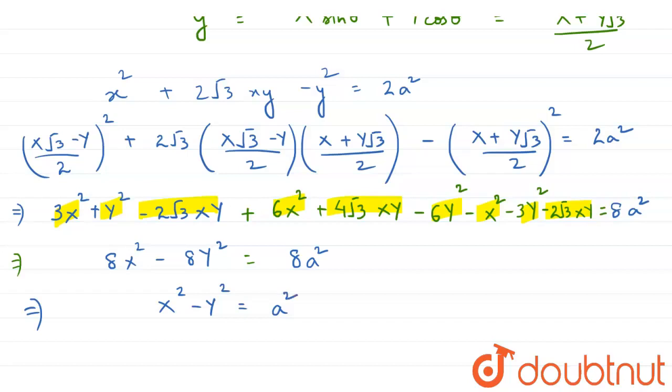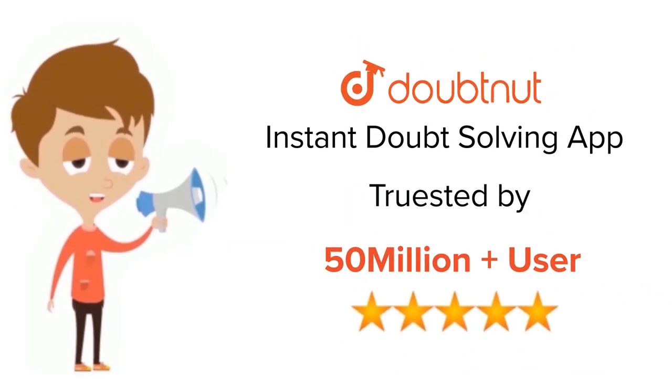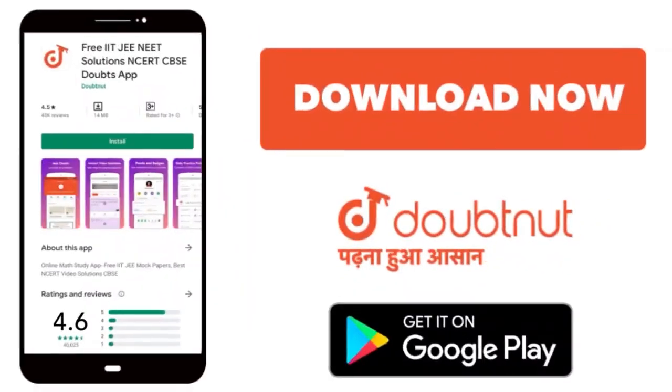x square minus y square is equal to a square. Thank you. For class 6 to 12th, IIT, and NEET level, trusted by more than 5 crore students, download Doubtnut today.